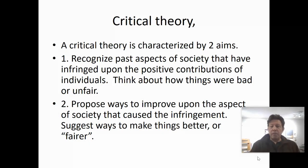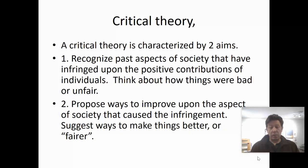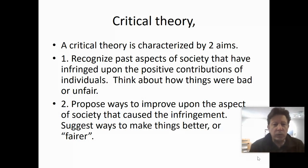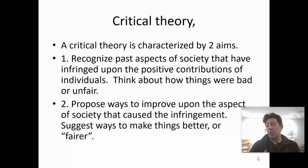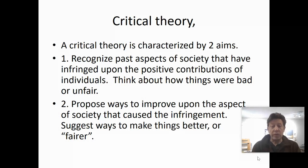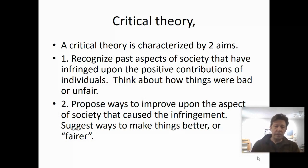Usually a critical theory has two parts. One, it recognizes that there are parts of the art world that aren't necessarily fair — things that aren't good about the art world. That's why it's a critical theory, because it starts by pointing out a disparity in the way art is viewed in society. The theory part has to do with the second part: proposing some sort of solution to the problem. So there's a problem, and then here's a way that we can fix that.